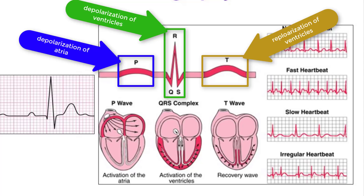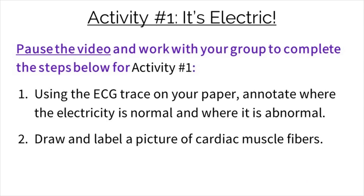Doctors and scientists can use this information to identify if a person has an irregular heartbeat by comparing their heart electricity to this standard graph.